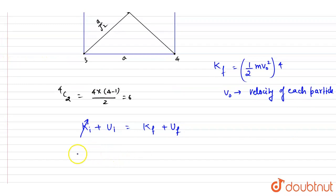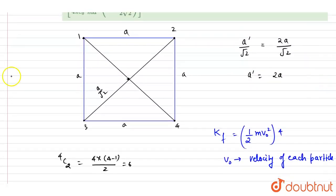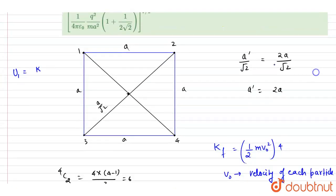The final kinetic energy is 2mv₀². Now writing the initial potential energy: there are four adjacent pairs, each with separation a, contributing kq²/a per pair. So the adjacent contribution is 4kq²/a.